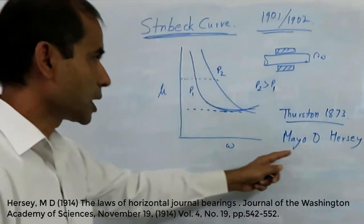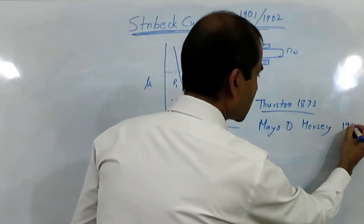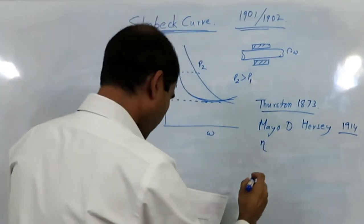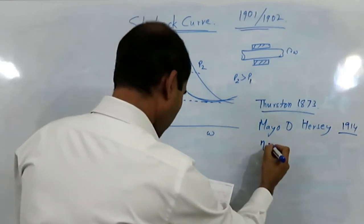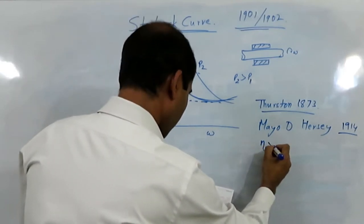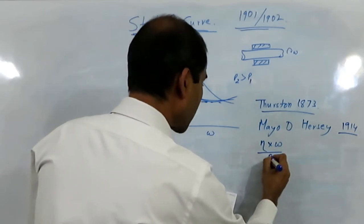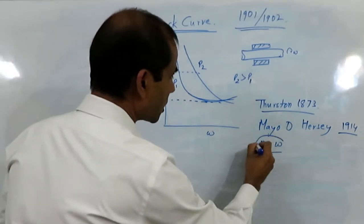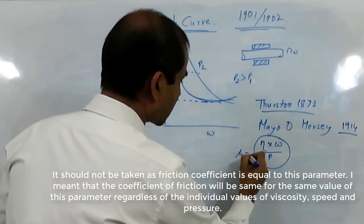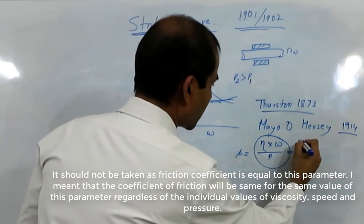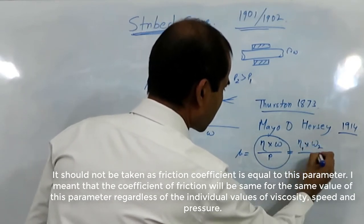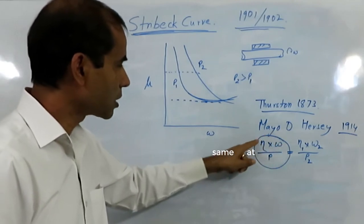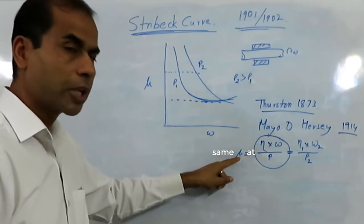Later, Mayow Hersey proposed in 1914 that if all conditions are the same for a journal bearing, the viscosity multiplied by rotational speed divided by the pressure — or sometimes taken as the load — this parameter will be the same for obtaining the same coefficient of friction.